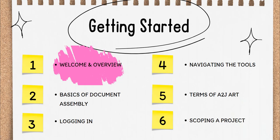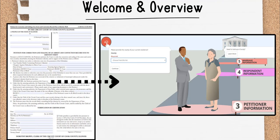Welcome to the first video in Section 1, Getting Started. This section will introduce you to document assembly with A2J Author and how it is being used to bridge the justice gap for hundreds of thousands of people each year. It will also give you a high-level view of the tech involved in the process, including an introduction to the A2J Authoring Suite of software tools. It will give you the skills you need to decide on a project, scope it out, and begin creating your A2J guided interview.